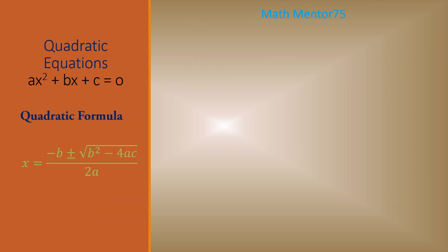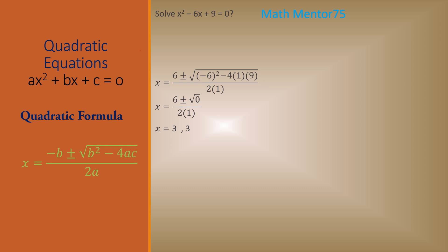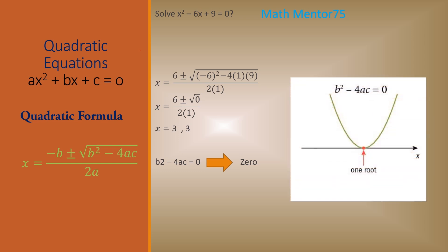Let's do one more example using the quadratic formula: x squared minus 6x plus 9. Just plug in the values. This time we have the same answer: 3 and 3. If you notice, b squared minus 4ac is 0 this time. Whenever it is 0, this means that our curve is intersecting the x-axis at one point — that is, we will have one root.